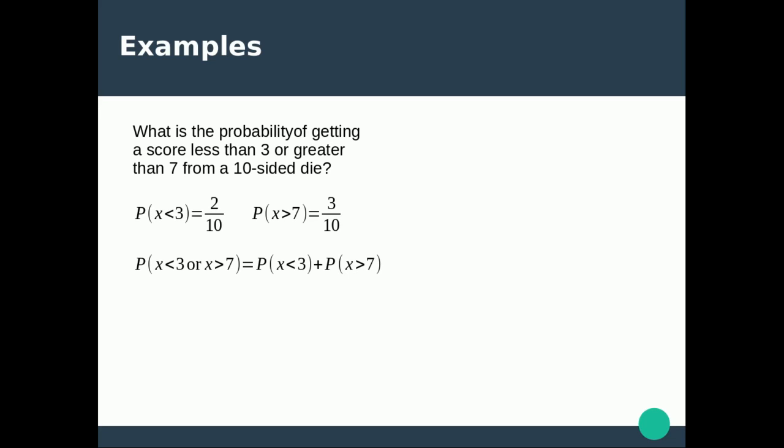The probability of one or the other is those two probabilities added together: 2 tenths plus 3 tenths, which gives us 5 tenths, which simplifies to 1 half.